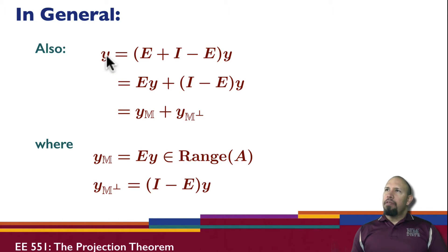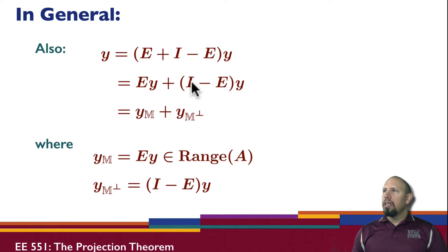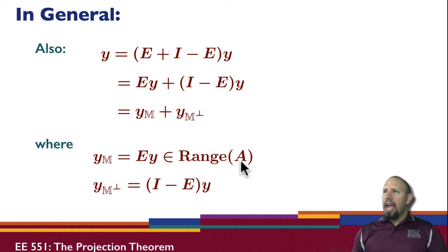In general, if we have some vector Y, we can always write it as: (E plus I minus E) times Y. This quantity is just the identity operator. By the distributive property, this equals E times Y plus (I minus E) times Y. E times Y is the projection onto the subspace M. (I minus E) times Y is actually a projection onto the subspace M perp. So if our M is the range of A, then Y_M equals E times Y and Y_{M perp} equals (I minus E) times Y.